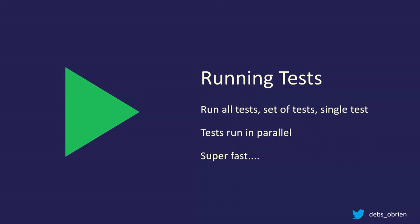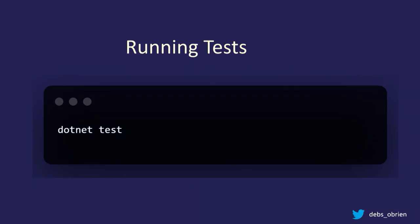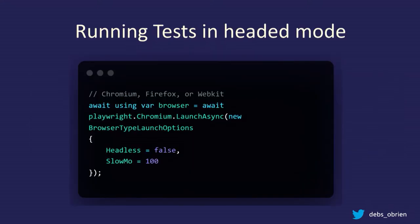You can run all your tests together, a set of tests, a single test, or tests in parallel — and tests run super fast. To run your tests, just use `dotnet test` — it runs in headless mode, nothing visible in the CLI, test done, go home. If you want to see it, add `headless: false` — it opens the browser and runs very quickly. If it's too fast, run in debug mode to slow it down and see exactly what's going on at each step.